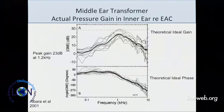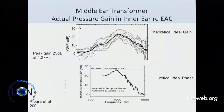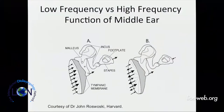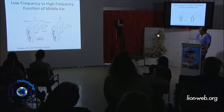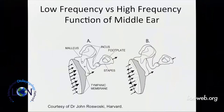If you look at the pressure in the vestibule generated for any given pressure in the ear canal — it's pretty good in the lower frequencies but you lose a lot across the vestibule ligament and stapes. In fact, it's only about 20 dB gain and only in a range from about 500 Hz to 2–3 kHz. At low frequencies the middle ear is fundamentally different — everything moves in phase. At high frequencies it's all vibrating in different ways, very inefficient.